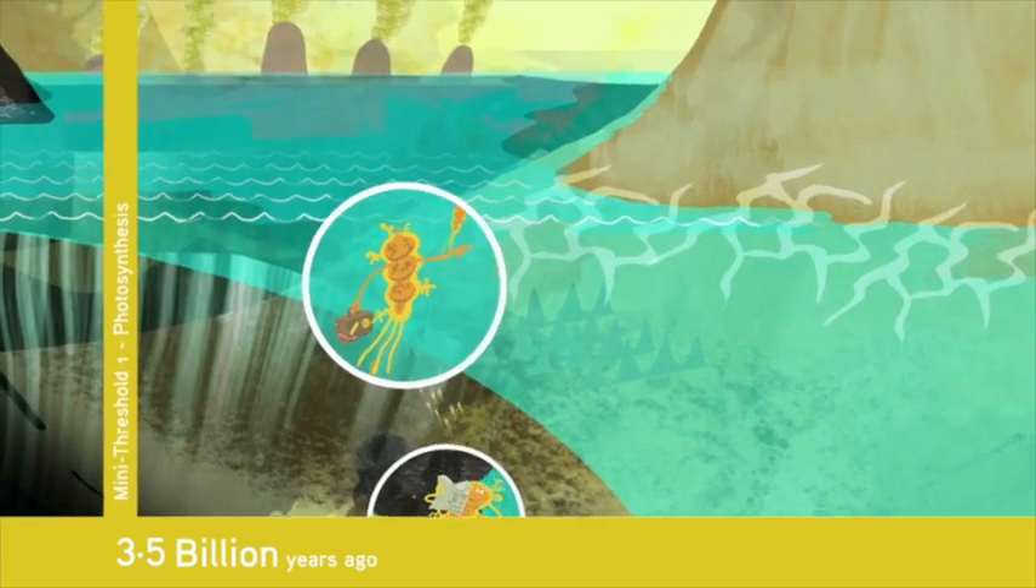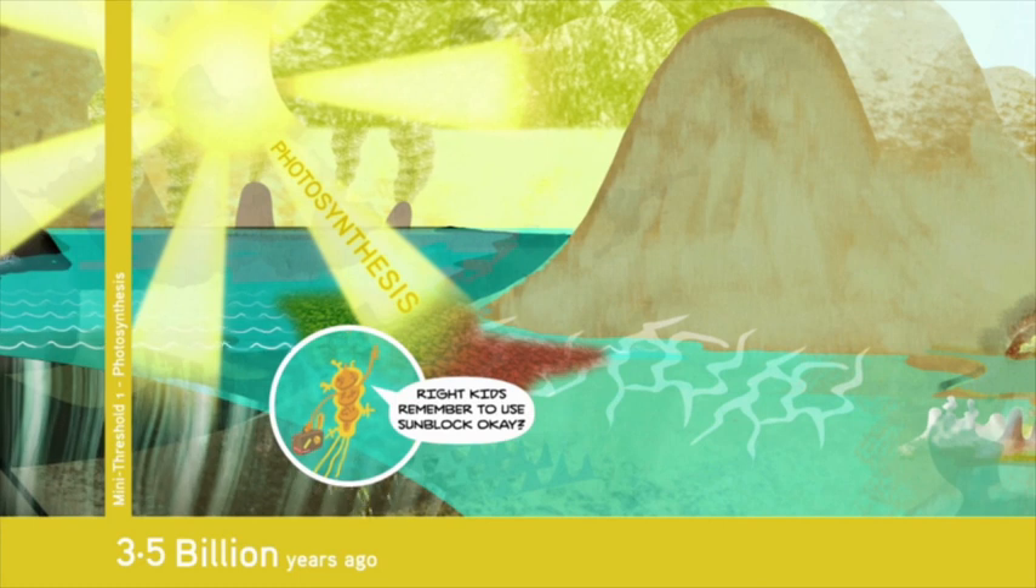About 3.5 billion years ago, some cells migrated to the ocean surface and evolved to use vastly more abundant energy from the sun. The process they developed to do this is called photosynthesis. It led to an energy bonanza, and that enabled life to spread to many more places.